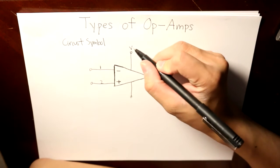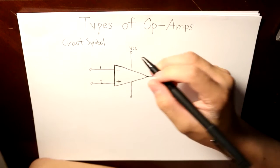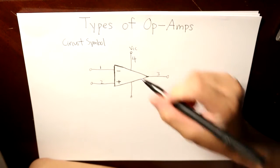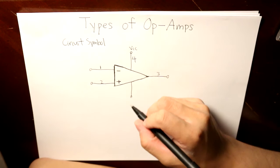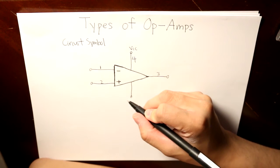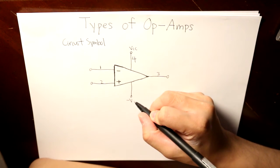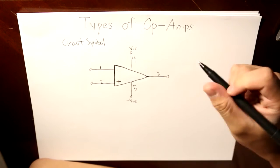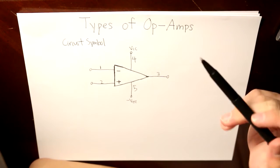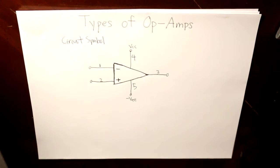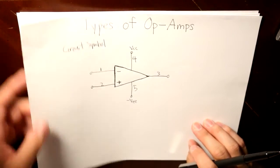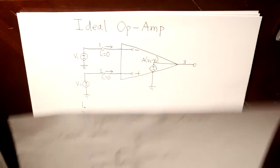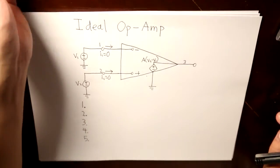Then we have the positive power supply VCC as four, and then we have the negative power supply terminal, which is the negative VEE, which is five. So this is the circuit symbol for an op amp.